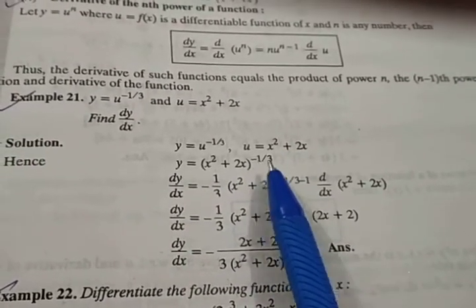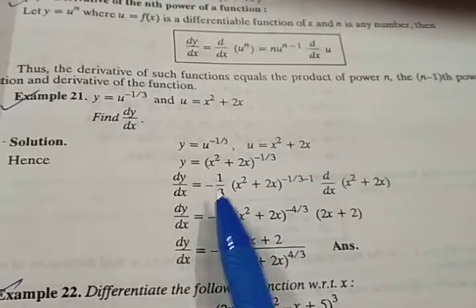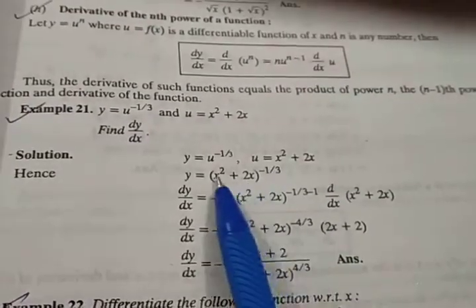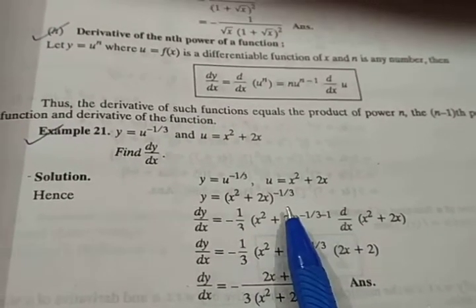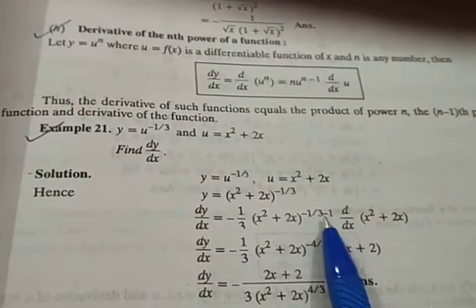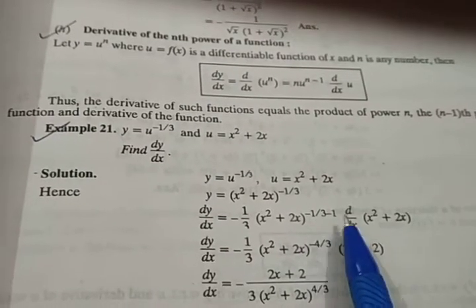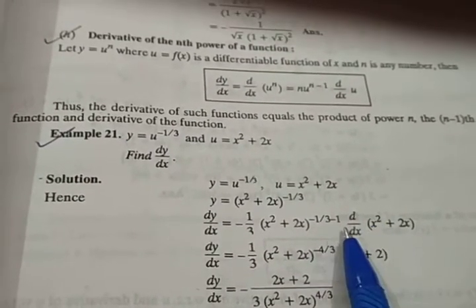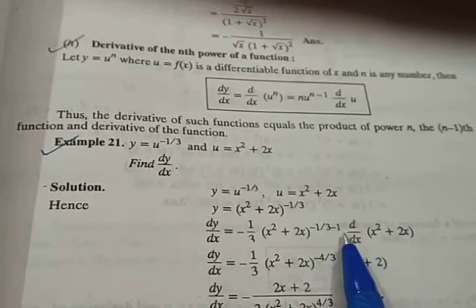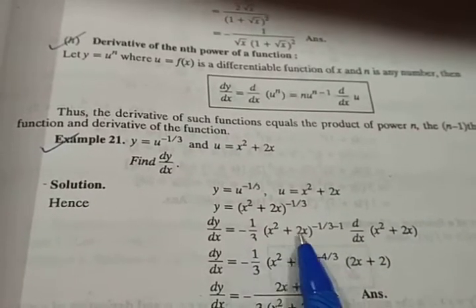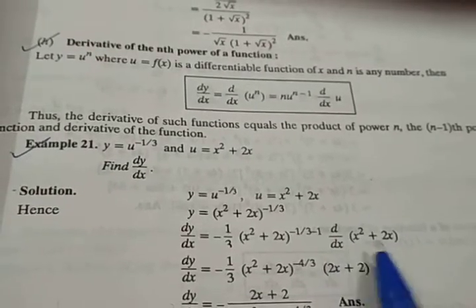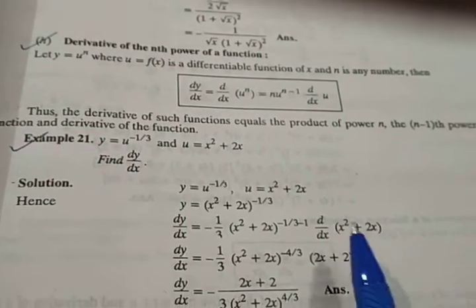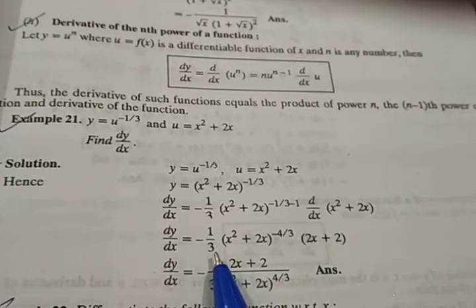So this is the power case. So that means minus 1 by 3, which is the power down, into, the entire bracket, you write it as it is, x square plus 2x. Raised to power n minus 1, so minus 1 by 3 minus 1, into the derivative of the bracket. So into d by dx of this bracket, x square plus 2x.